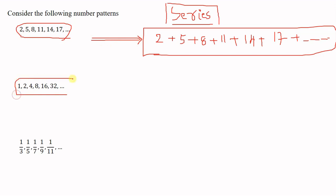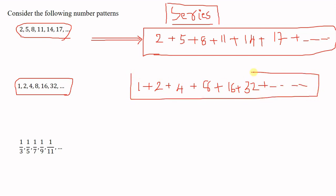Here we have a geometric sequence. If we write it as a sum — 1 plus 2 plus 4 plus 8 plus 16 plus 32 plus etc. — this is also an infinite series. Since it comes from a geometric sequence, it is called a geometric series. So, a series is a sum of the terms of a sequence; it is generated by simply adding all the terms of a sequence.